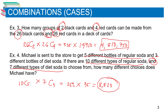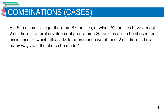That's it for question number four. Let's proceed to question number five: In a small village there are 87 families, of which 52 families have at most two children. In a rural development program, 20 families are to be chosen for assistance, of which at least 18 families must have at most two children. In how many ways can the choice be made?